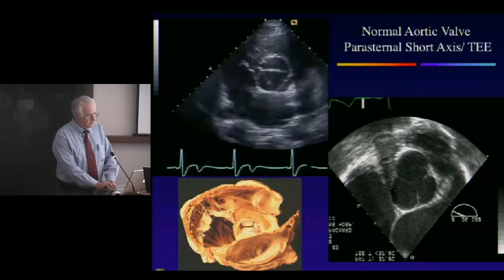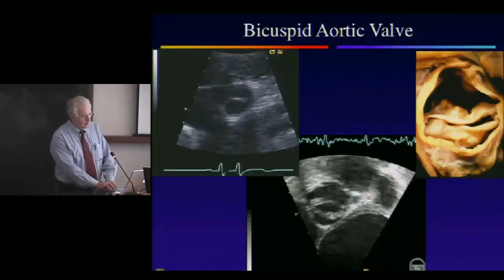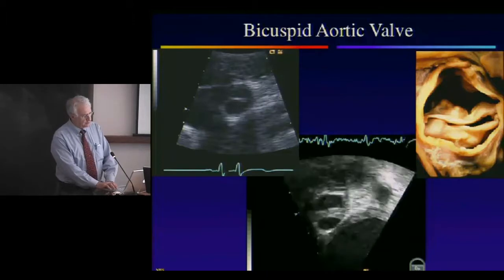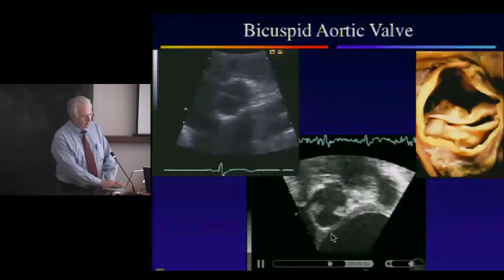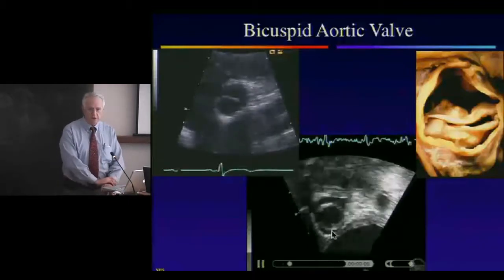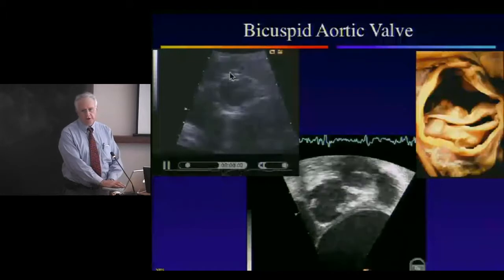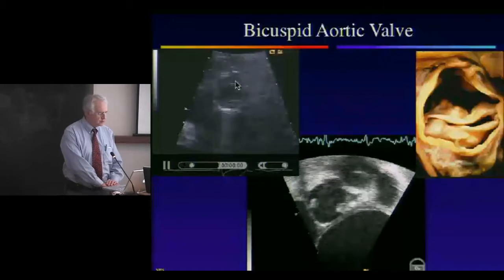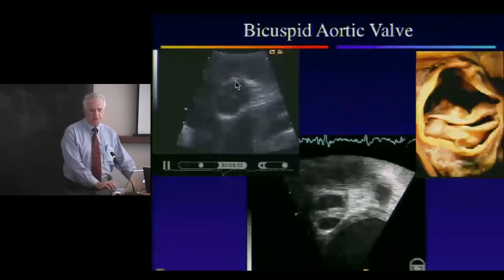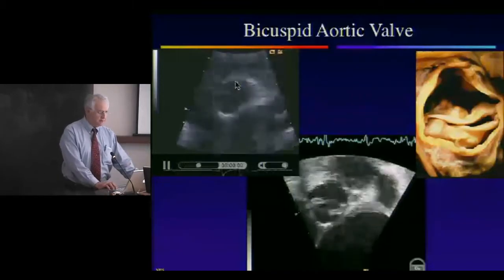For bicuspid valves, we can see a normal tricuspid valve by both surface echo and transesophageal echo. Here's a bicuspid commissural cusp with left-right commissural fusion. The best way to look at this is in real time. We normally record these by cine capture and slow the speed down, because sometimes the valve may look like a tricuspid valve in the closed position and the fusion is only partial — when it opens, it's really a bicuspid valve.